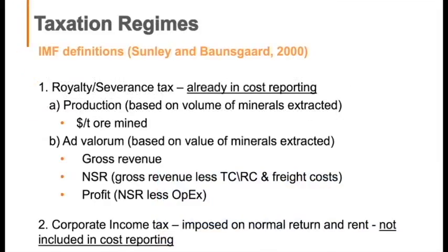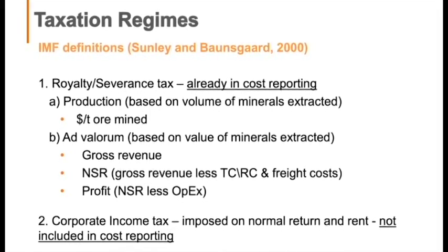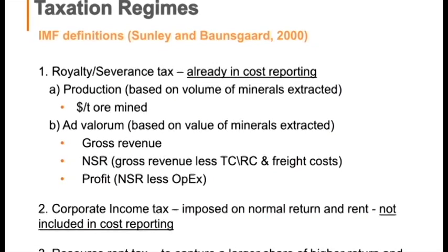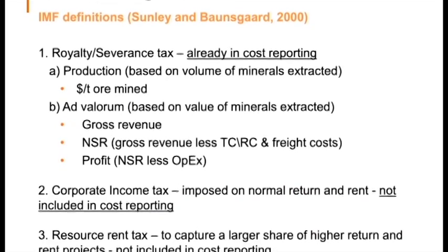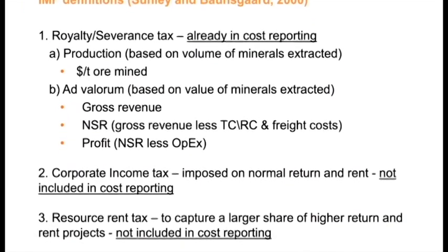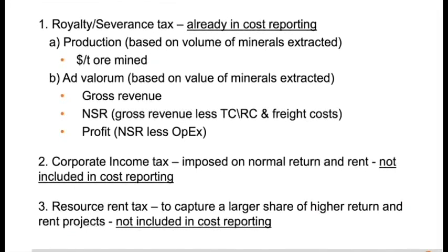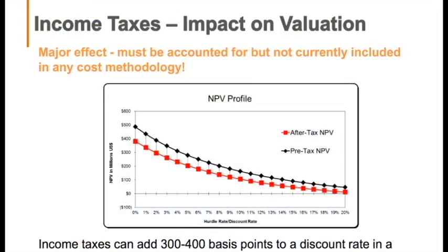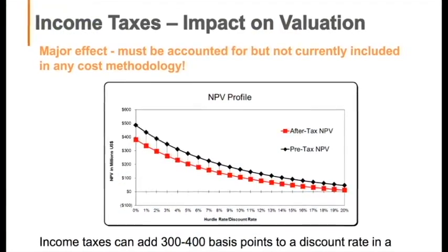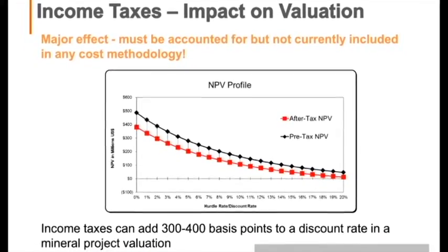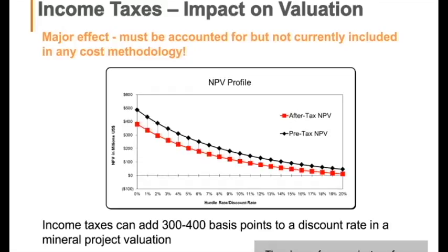Luckily, we have definitions from the IMF of what taxation regimes mean. Royalties and severance taxes are either production taxes based on volume or ad valorem taxes based on the value of minerals — and most people we see do include those in cost reporting. But what is never included — and this seems to be industry consensus — is corporate income tax and any resource rent tax. The pre-tax NPV curve at various discount rates versus after-tax shows you need about 300 to 400 basis points to make up the difference. It's a significant impact.